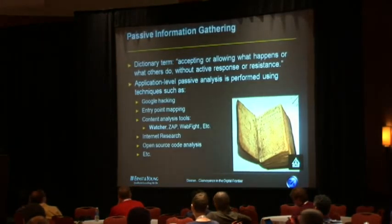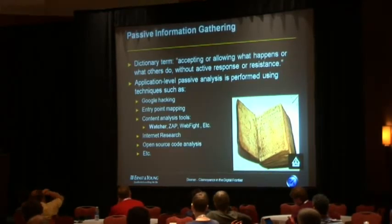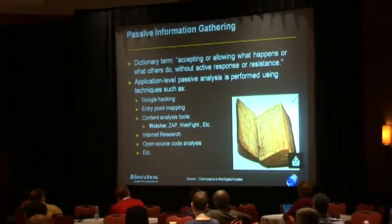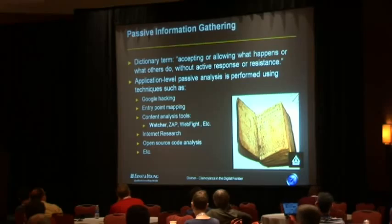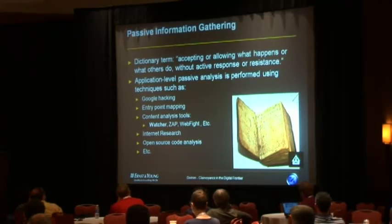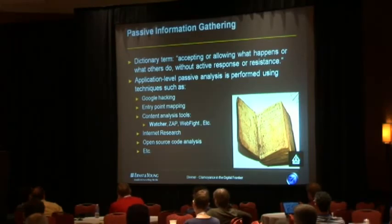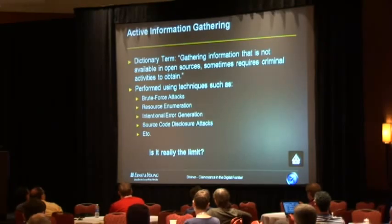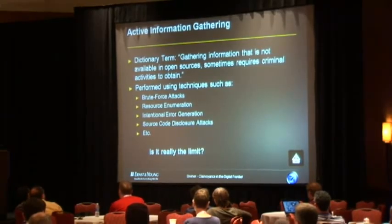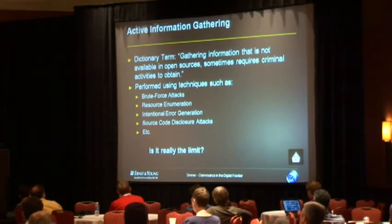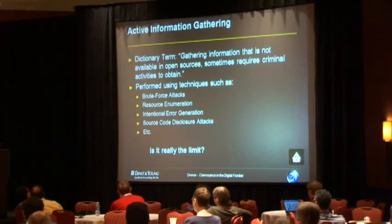There are two main types of information gathering processes. There are passive information gathering processes — generally non-intrusive processes that attempt to obtain information without any actual attacks. Things such as search engines, Google hacking, obtaining HTML comments. And there are active information gathering processes — things such as fingerprinting or file and directory enumeration. There's also a small subcategory called manual active information gathering, which in my opinion is probably the most powerful tool that the tester has.